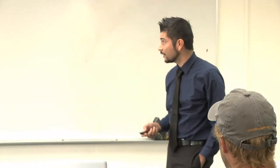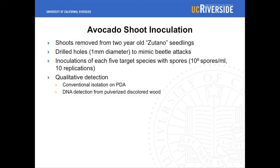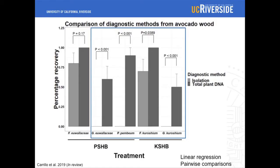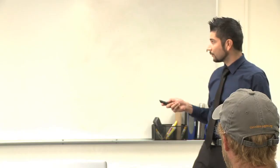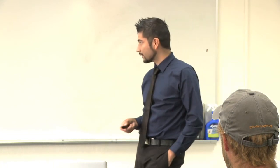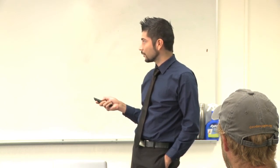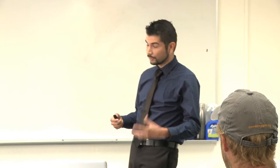Now that we had a working assay, we wanted to do a controlled inoculation into wood to see if we can detect it from the wood. We used avocado and drilled holes one millimeter in diameter to mimic beetle attacks, and deposited spore suspensions from the five different targets into that wood. We then compared our molecular method to conventional isolation on PDA. The molecular detection method was significantly greater than conventional isolation on PDA, except for Fusarium euwallaceae. But our molecular detection method detected it 100% of the time for the Fusarium species, which are most prevalent because they are the primary symbiont the adults feed on.